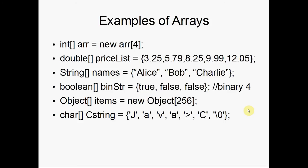Here are a few examples. So int, open and close brackets, then arr equals new array, and this one's going to be a size 4. Because it's just going to have empty spaces, there's going to be zeros by default. Next we have double, open and close brackets, price list equals, and then we have a list of prices. You can also use this for strings, as seen here, and then booleans — this is actually just trivia, the binary string for 4. Here we have some objects, and here is a character array, or in C this would be a string, but in Java just a character array.